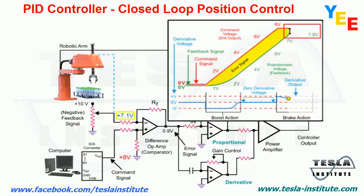As the arm continues in motion, the feedback voltage is nearing the command voltage. The error signal from the difference op-amp is also decreasing, and as a result, the arm motor speed decreases.